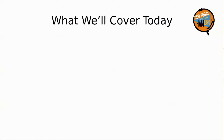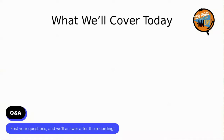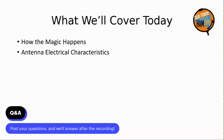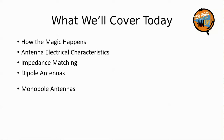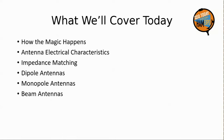Time is short today. Here's a quick look at what we'll cover. We'll talk about how the signal from your radio gets turned into a propagating electromagnetic wave. We'll hit some basic electrical characteristics that come into play in antenna science. We'll touch on impedance matching, why it's important, and how it's done, and we'll hit dipole antennas, monopole antennas such as quarter-wave vertical antennas, and how directional antennas work.